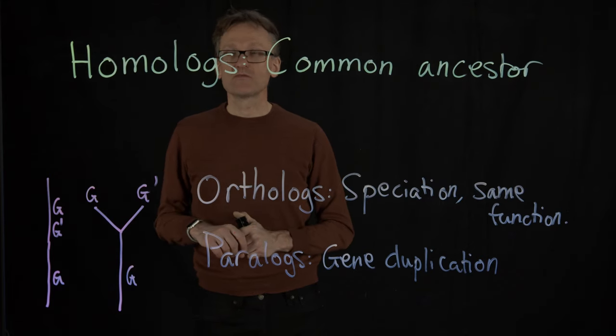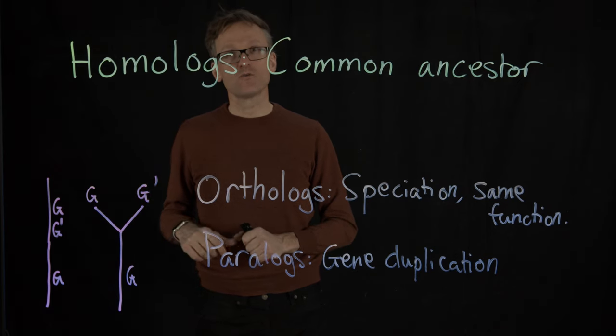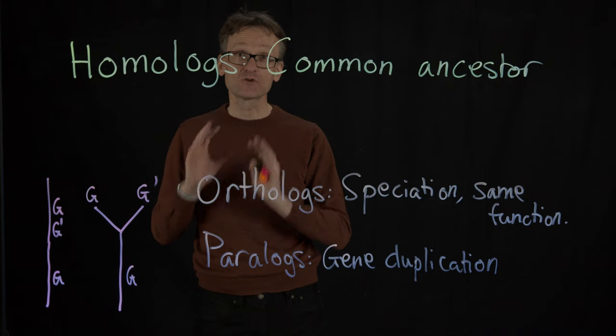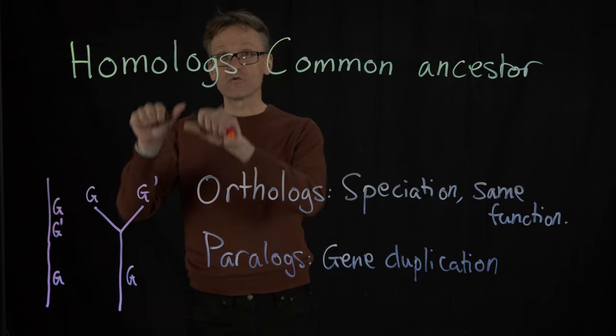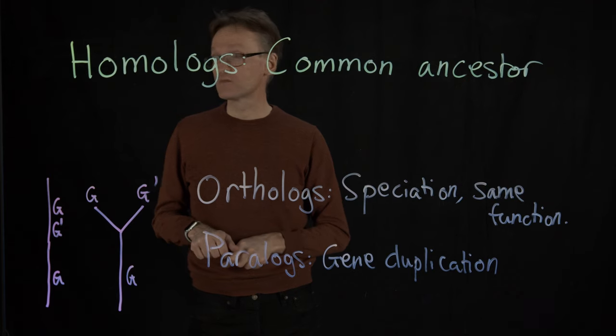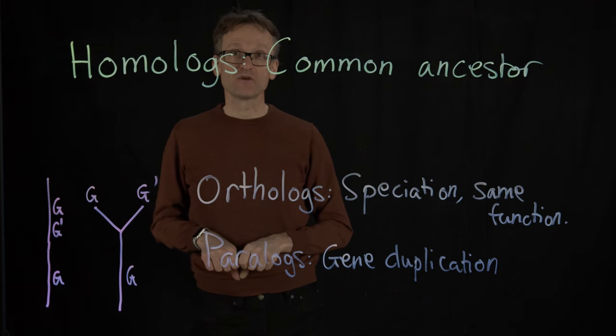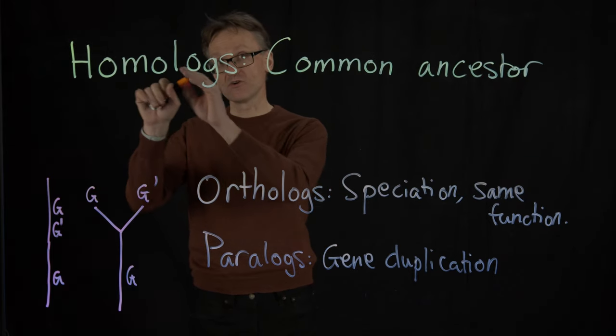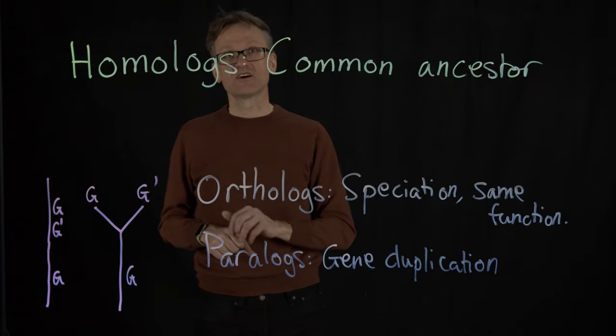If there's only one thing you're going to remember from this slide, it is homologs. Homolog is an exceptionally important concept, and much of what I'm going to talk about the rest of this lecture relies on ways that we can detect and talk about homology. So homologs have common ancestors. It's not that they are similar, because similarity can go from zero to a hundred percent. Homologs is binary—they have a common ancestor.